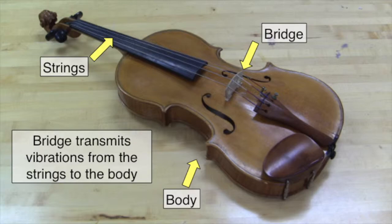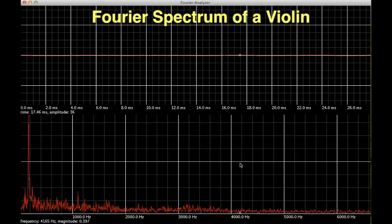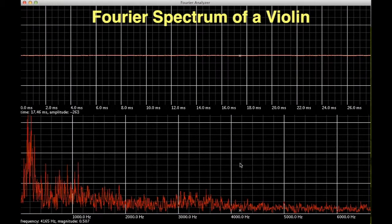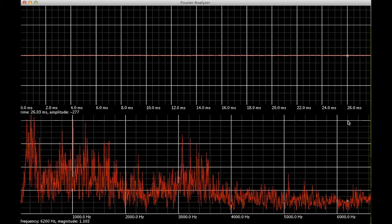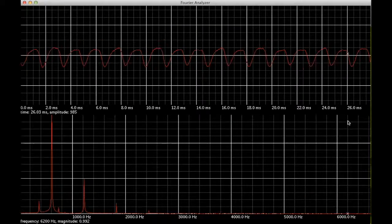Let's take a look at the Fourier spectrum for a violin. We can pluck one of the fatter, heavier strings to produce a lower frequency sound, or pluck one of the thinner, lighter strings to get a higher frequency sound.